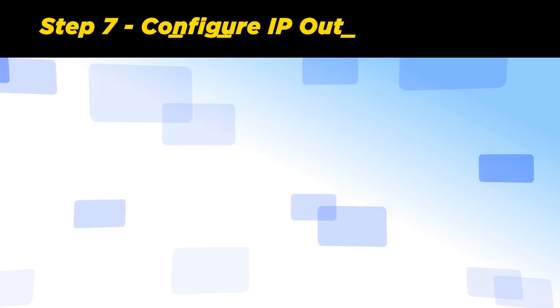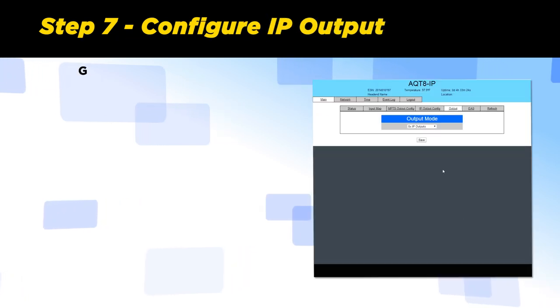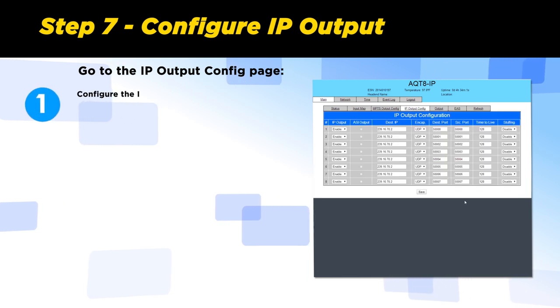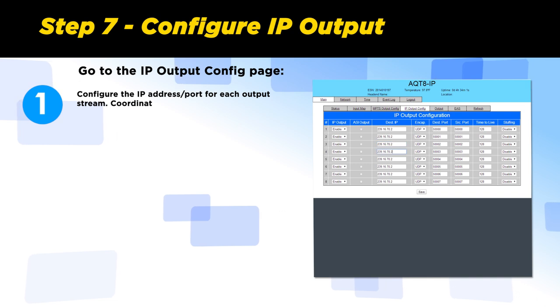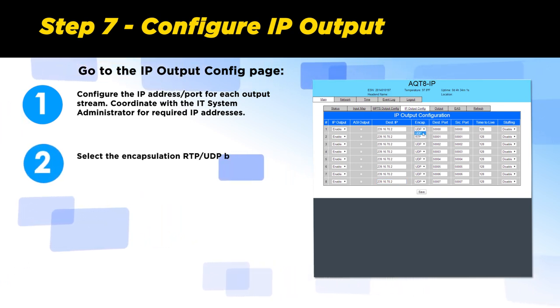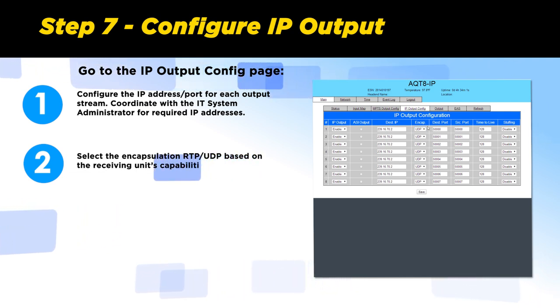Step 7: Configure IP output. Go to the IP output config page. Config the IP address port for each output stream. Coordinate with the IT system administrator for the required IP addresses. Select the encapsulation RTP or UDP based on the receiving unit's capabilities. Enable the IP output.